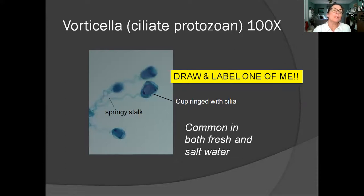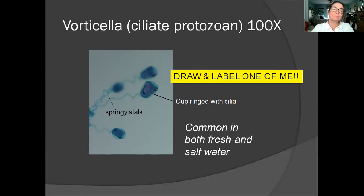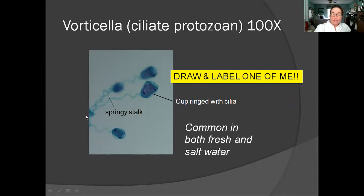This is another protozoan that has cilia — this is a vorticella. They look like a little cup on a springy stalk. Each one attaches on its own to a surface like a rock or a stick. Like the stentor, they have a ring of cilia lining their cup that draws food down into the cup where they can grab it. These are common in both fresh and salt water.